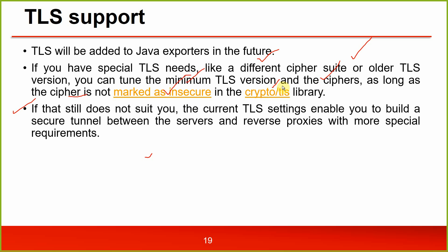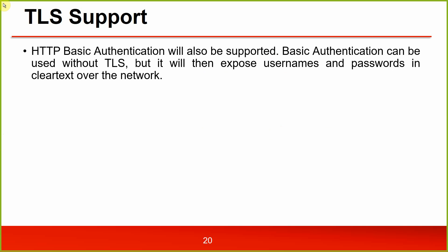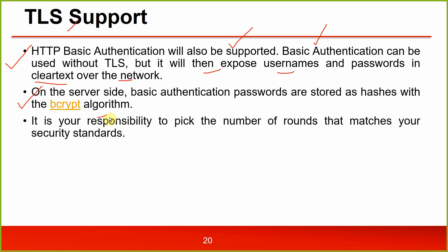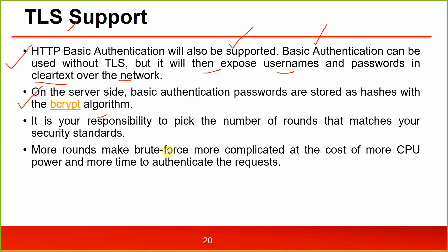If you have special TLS needs like a different cipher suite or older TLS version, you can tune the minimum TLS version and ciphers as long as the cipher is not marked as insecure in the crypto library. If that still doesn't suit you, the current TLS settings enable you to build a secure tunnel between servers and reverse proxies. TLS HTTP basic authentication will also be supported. Basic authentication can be used without TLS, but it will then expose username and password in clear text over the network — definitely not secure. On the server side, basic authentication passwords are stored as hashes with bcrypt.